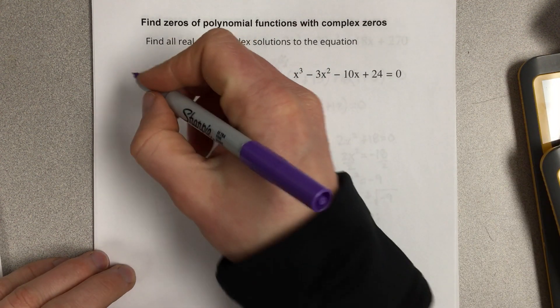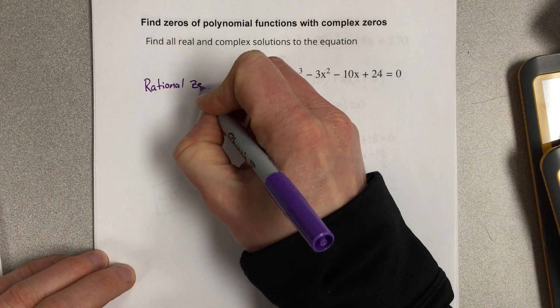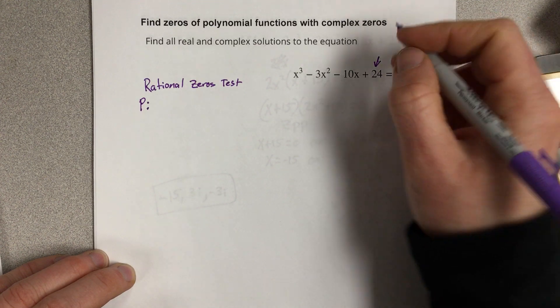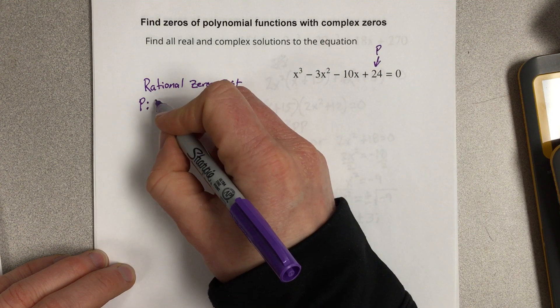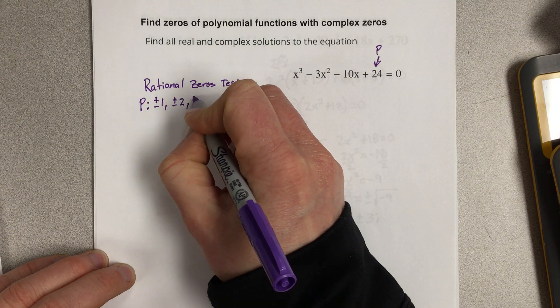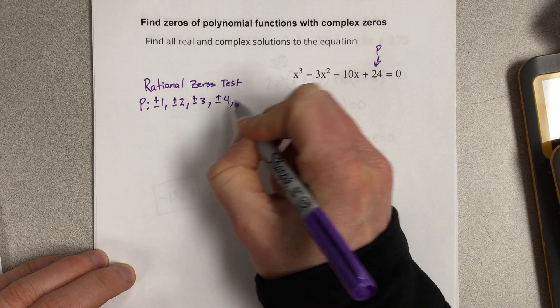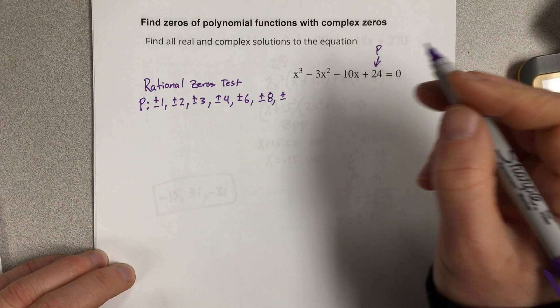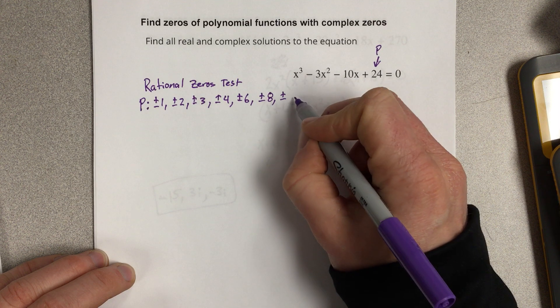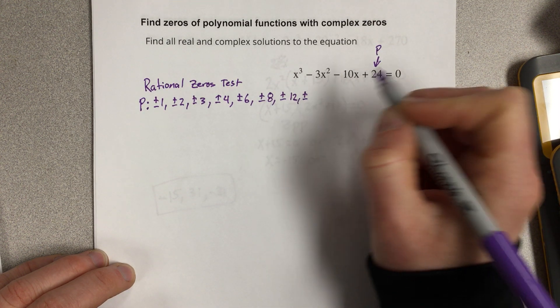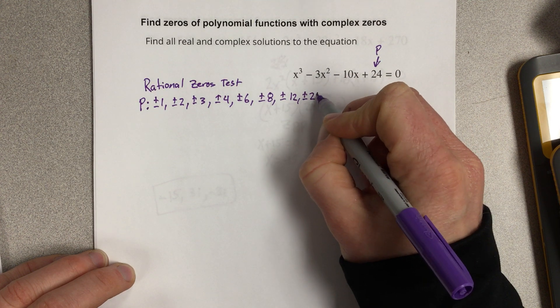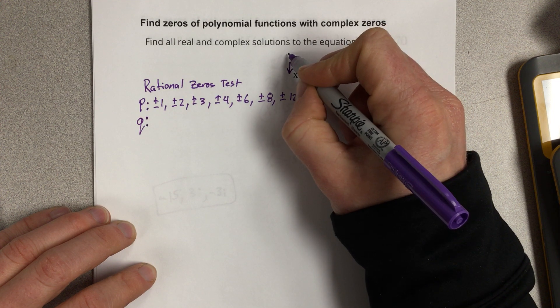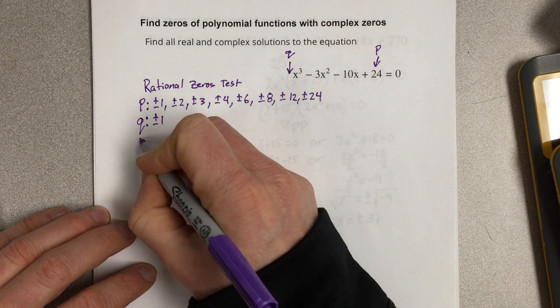So I'm going to go straight to the rational zeros test. The rational zeros test says that if I take p, which is the ending constant, and I find the factors of p, which would be ±1, ±2, ±3, ±4, ±6, ±8, ±12, ±24. If I take all those factors and divide them by q, which is the leading coefficient, which is just 1, so its factors would just be ±1.